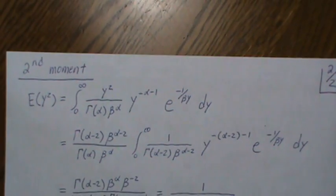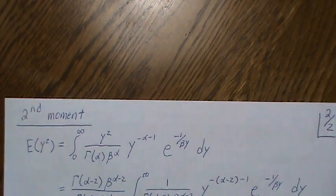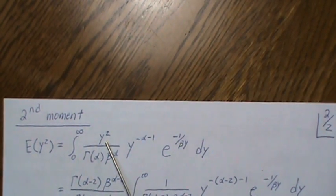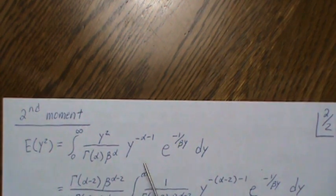Now, to calculate the variance, let's calculate the second moment first, and then we'll calculate the variance. And it's very similar to what we do with the mean, where we just stick in a y squared times the density.